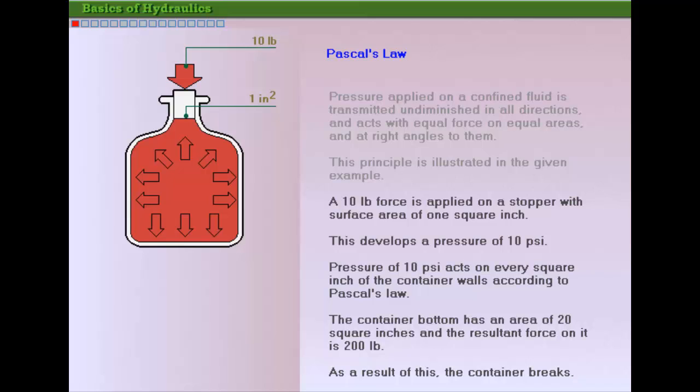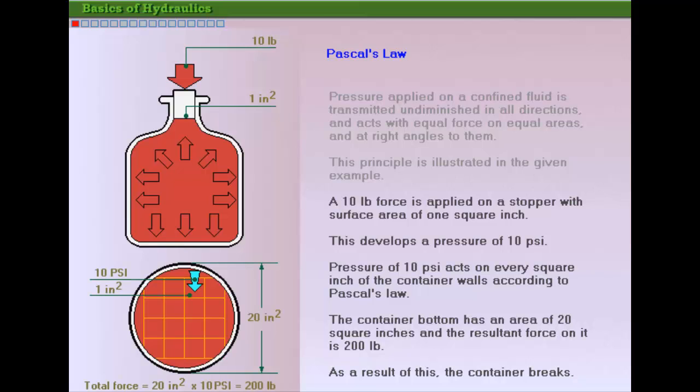According to Pascal's law, this pressure is then transmitted through the fluid undiminished in all directions. This pressure acts against all equal areas of the bottle. The resultant output force is multiplied in this example over the 20 square inches of the bottom of the bottle. In this case, an output force of 200 pounds is generated with an input force of only 10 pounds. Due to this increased force on the bottom, the bottle breaks.